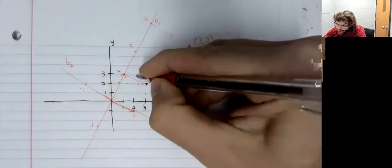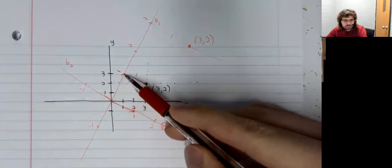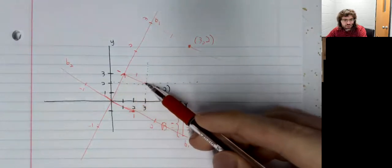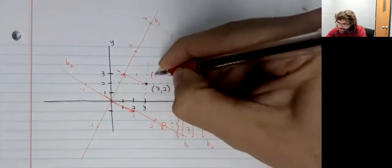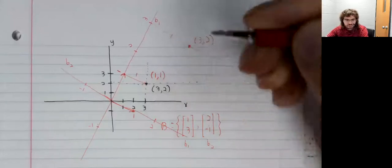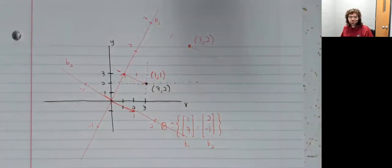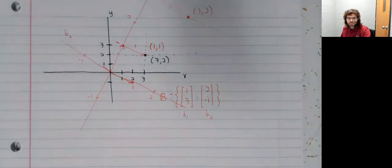Well, to get to this point, we go one unit in this direction and one unit in this direction. Suddenly the point that we've been calling three comma two is now one comma one.